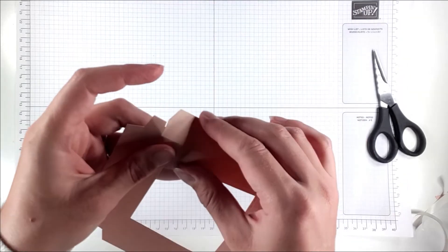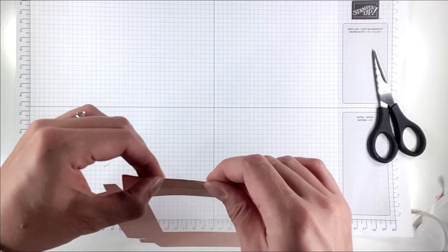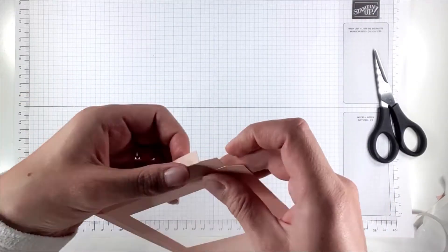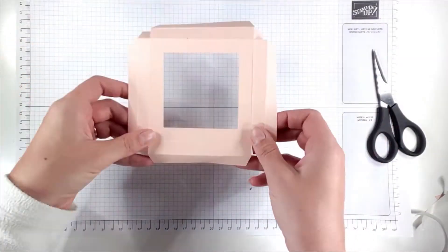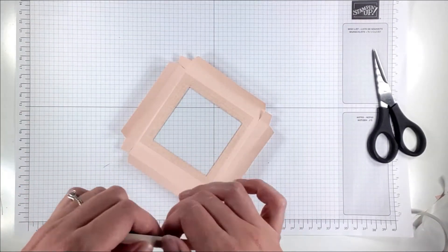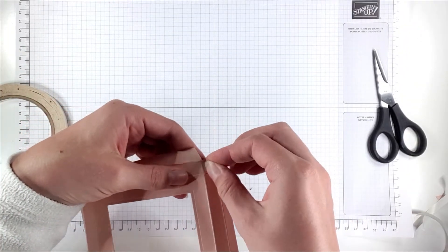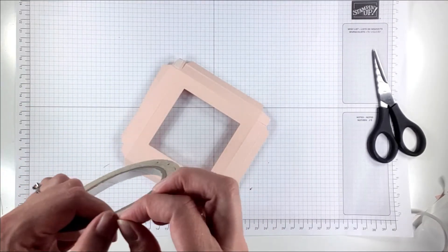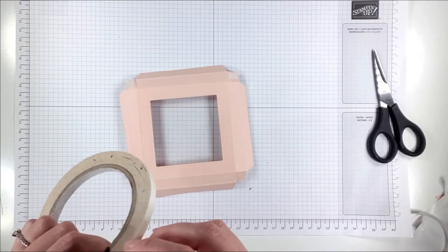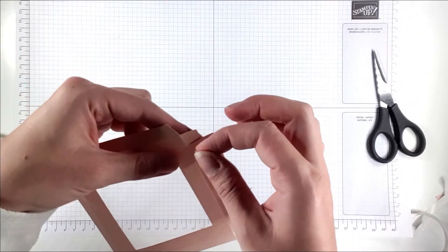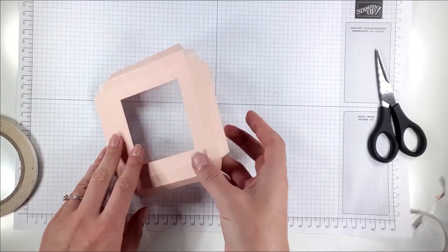Then I'm just going to fold all of the score lines. Then I'm just going to put a little bit of extra tear and tape on each of these small flaps. You can use liquid adhesive but I do prefer to use the tear and tape just because it sticks instantly - you don't have to wait for it to dry. And like I say it is really sticky so it holds really well.